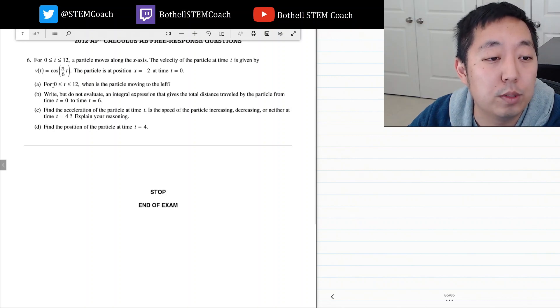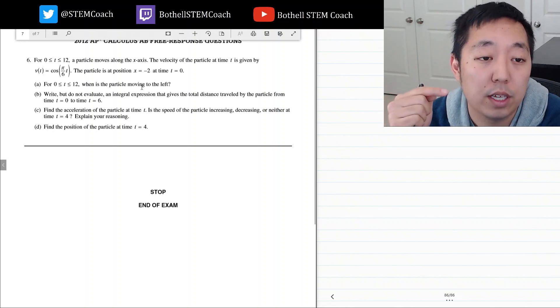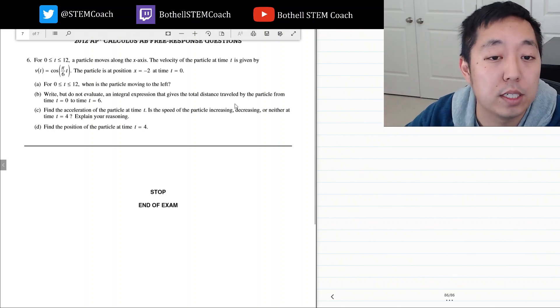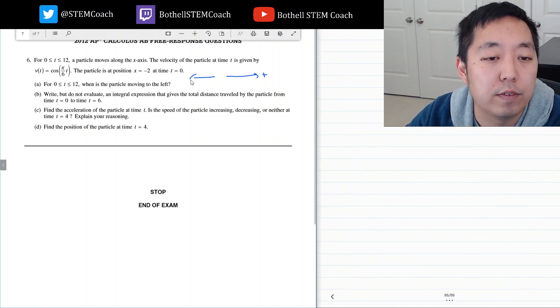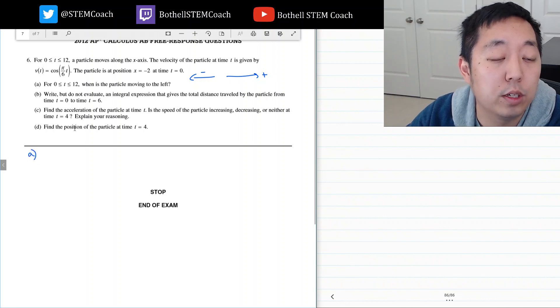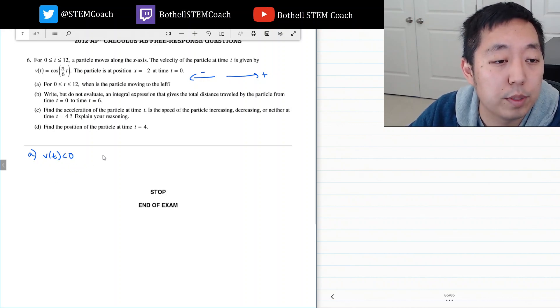For t between 0 and 12, when is the particle moving to the left? Moving to the left means the velocity would be negative, because to the right is positive direction and to the left is negative direction. So the particle's moving to the left whenever v of t is less than 0. That's the same as cosine pi over 6t less than 0.